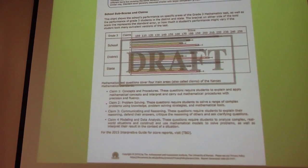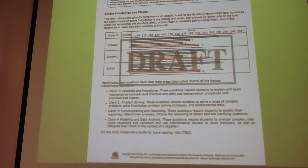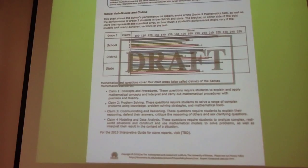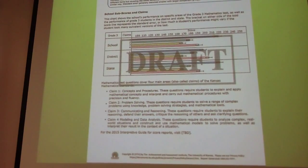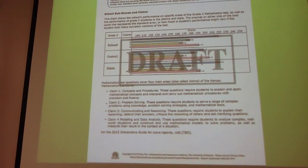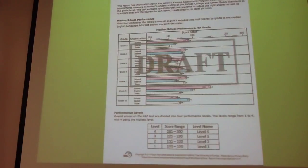This is the back part of that report. The brackets on either side of the score represent a standard error, which means how much a student's performance might vary if given a different version of the test. It's the same report structure applied to math.